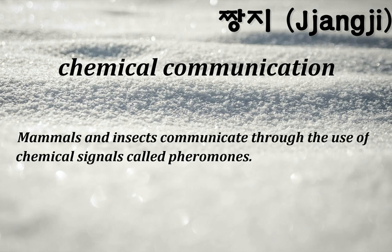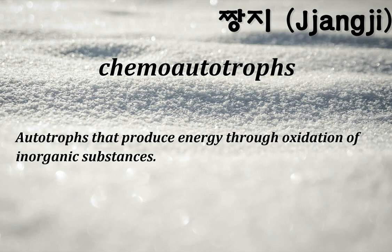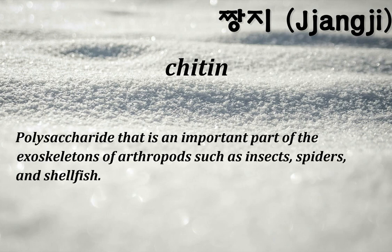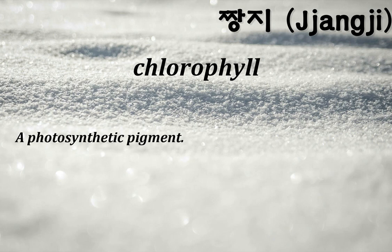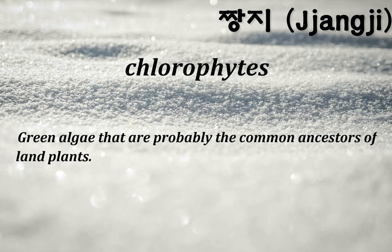Chemical communication: mammals and insects communicate through the use of chemical signals called pheromones. Chemoautotrophs: autotrophs that produce energy through oxidation of inorganic substances. Chitin: a polysaccharide that is an important part of the exoskeletons of arthropods such as insects, spiders, and shellfish. Chlorophyll: a photosynthetic pigment. Chlorophytes: green algae that are probably the common ancestors of land plants.